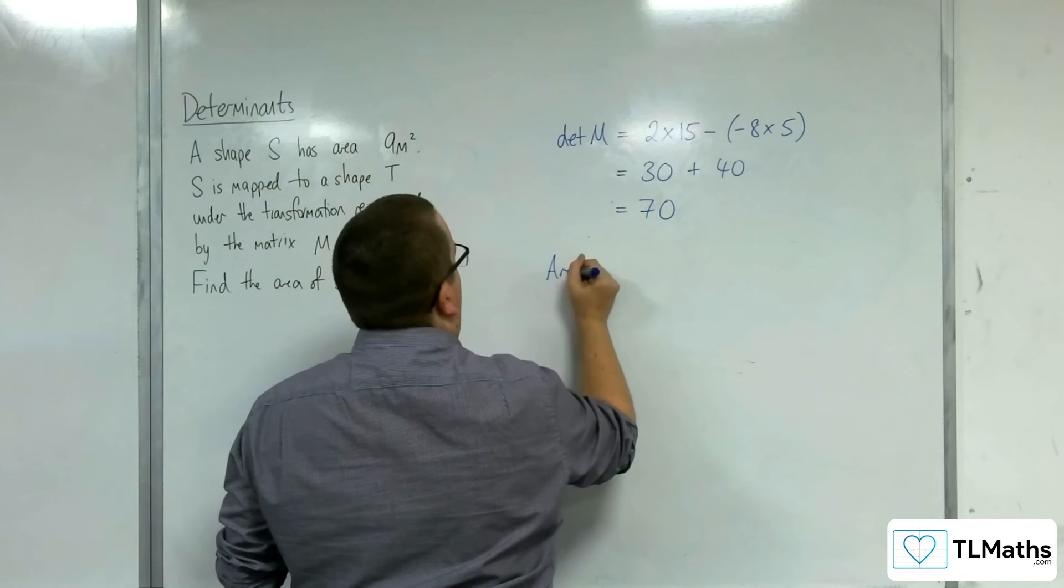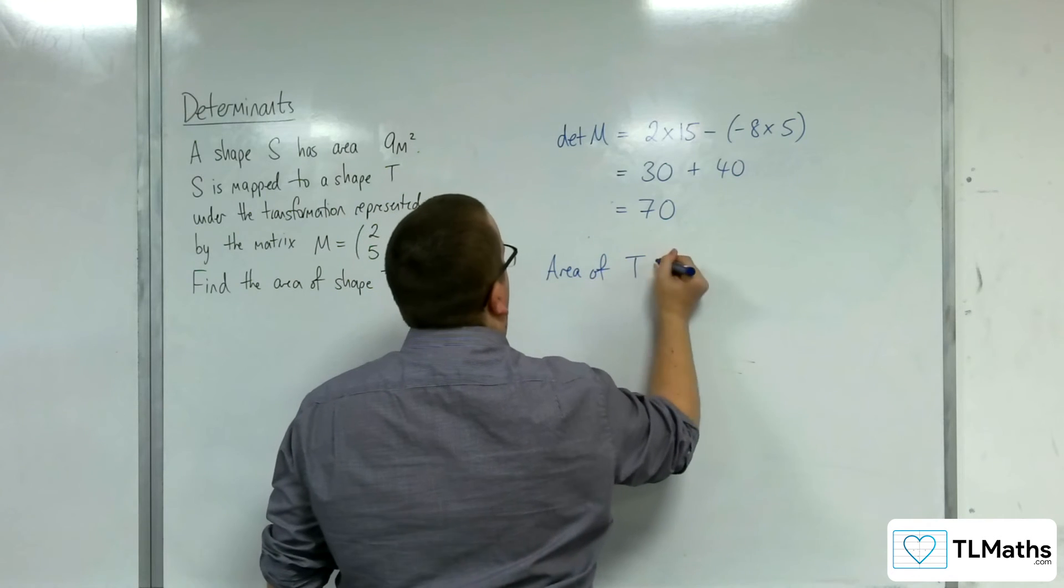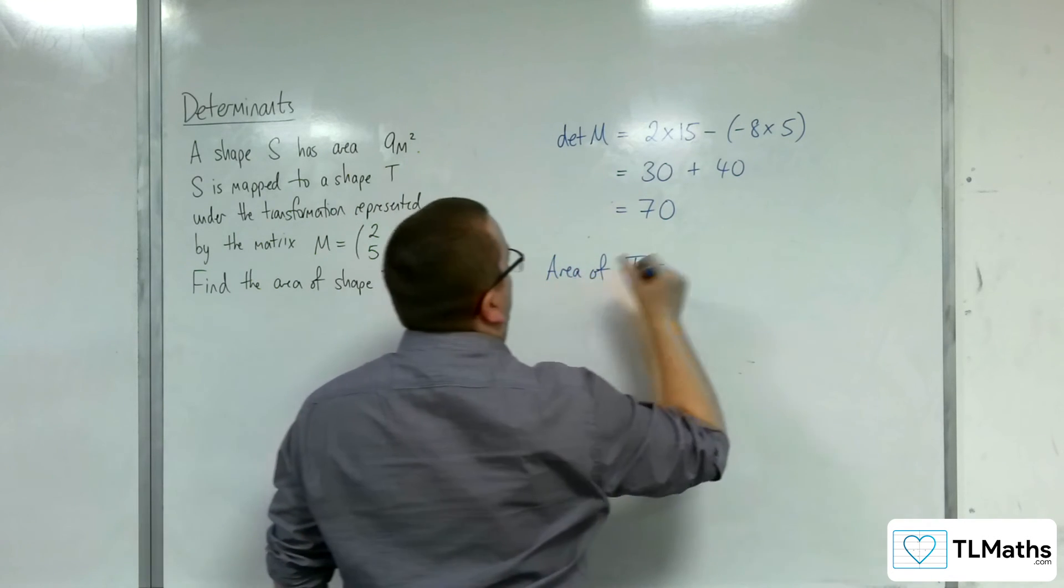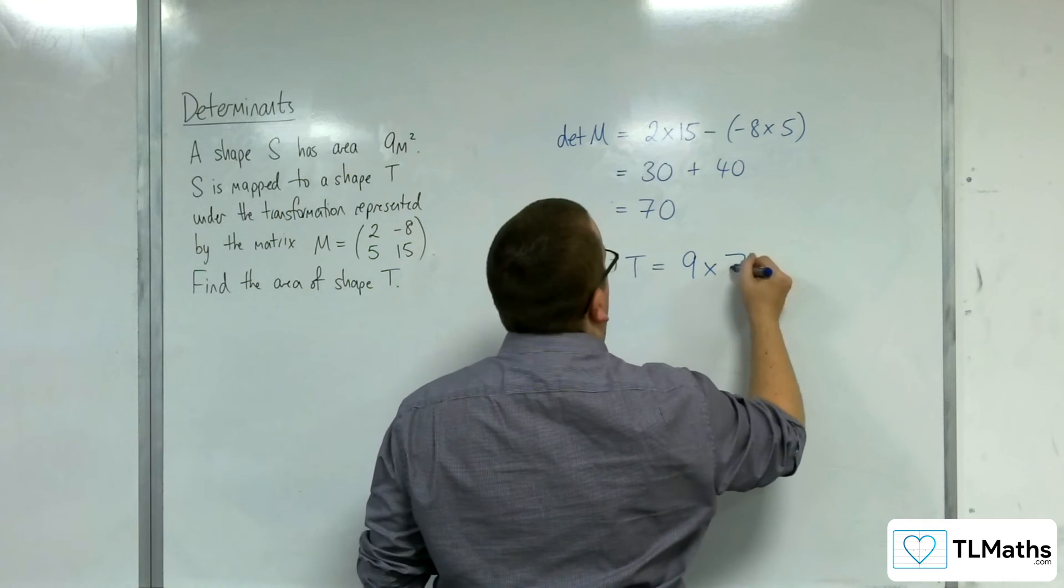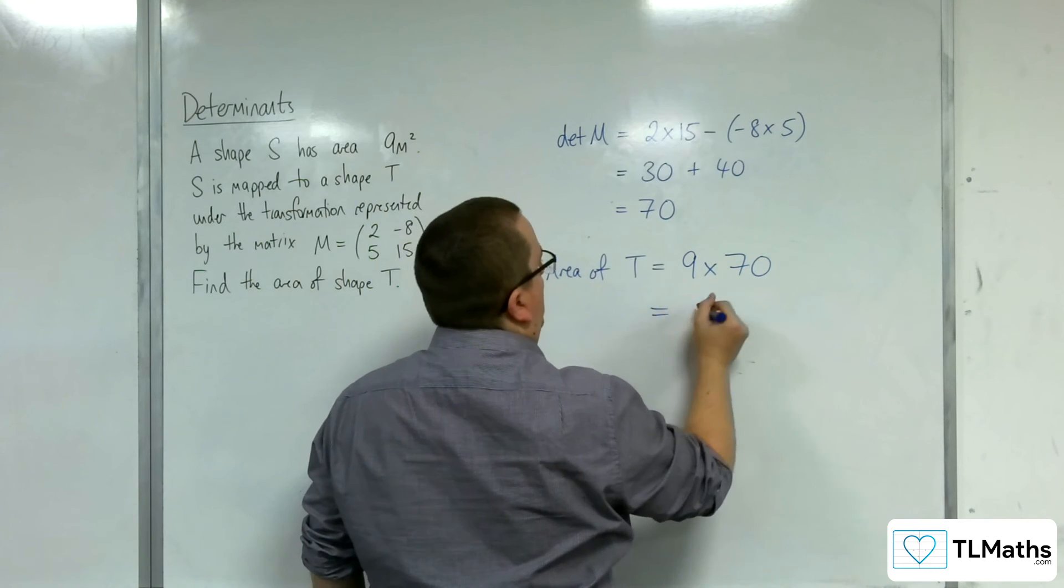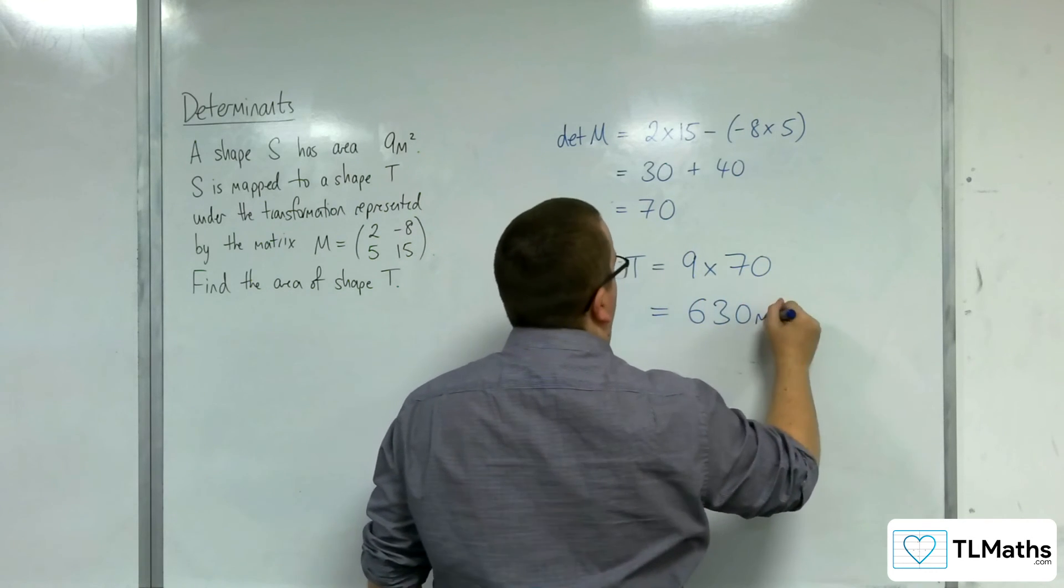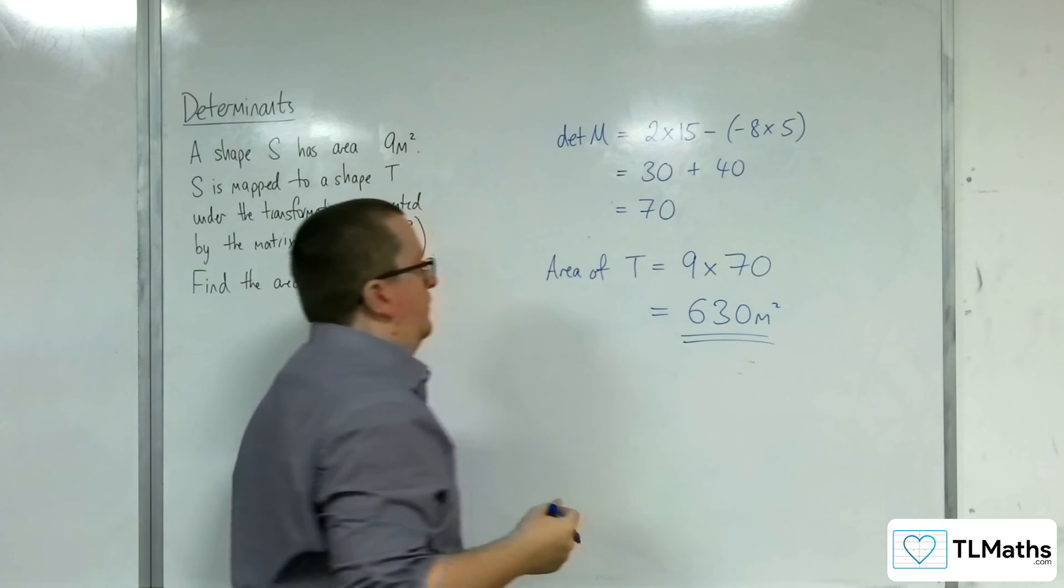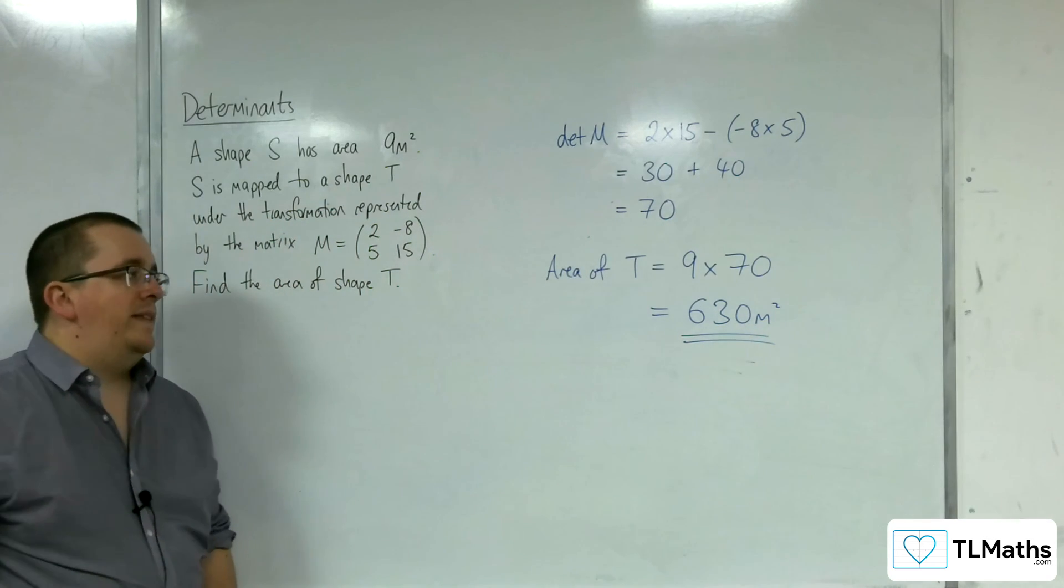So the area of T is equal to the 9 square metres that we had originally, multiplied by 70, and so 630 square metres. OK, so that's how we can work out the area of T.